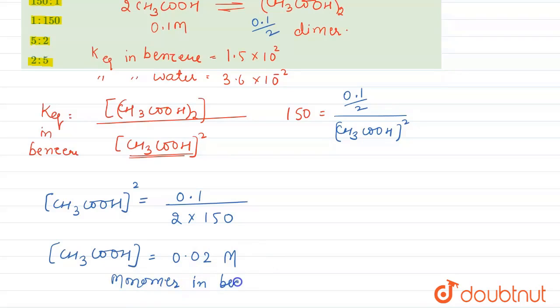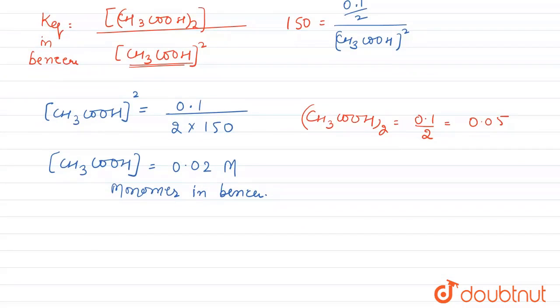In benzene, we have the concentration of dimer in benzene equal to 0.1 divided by 2, this is 0.05.